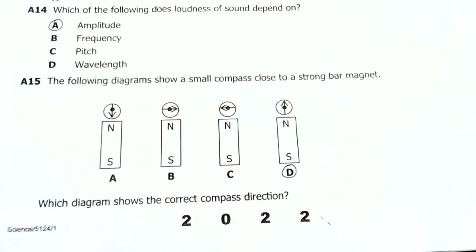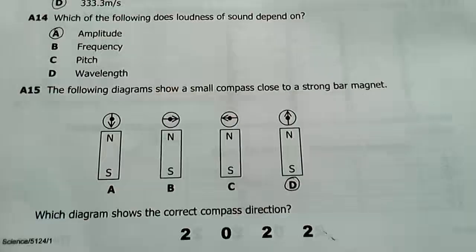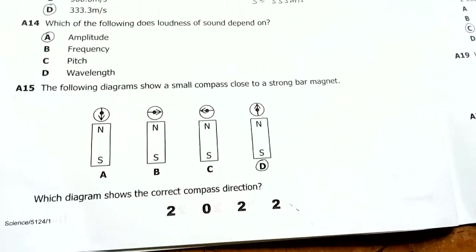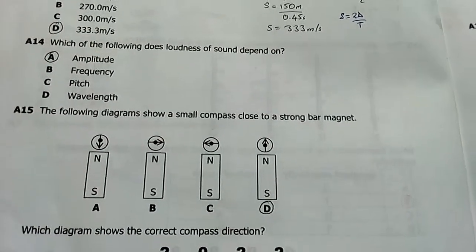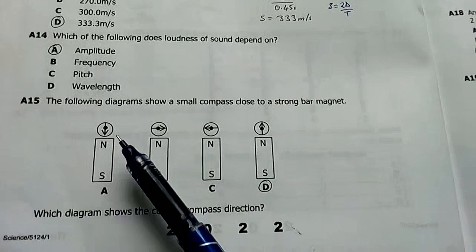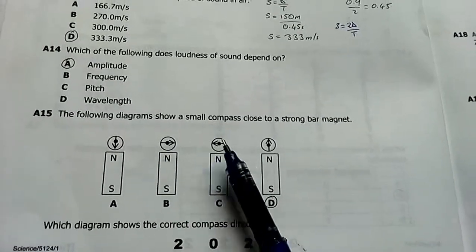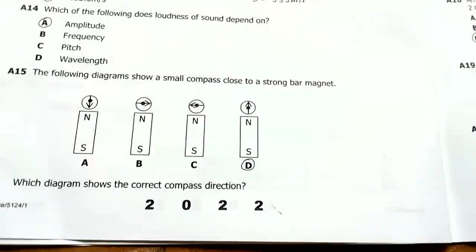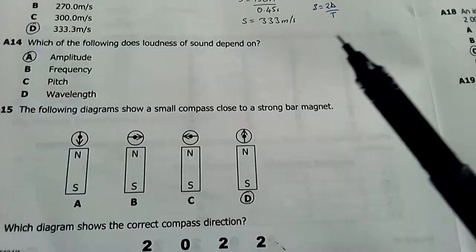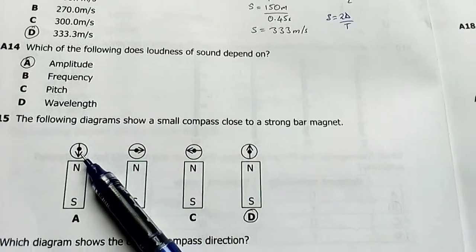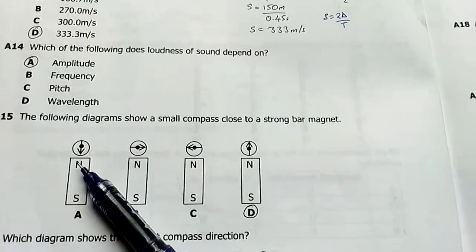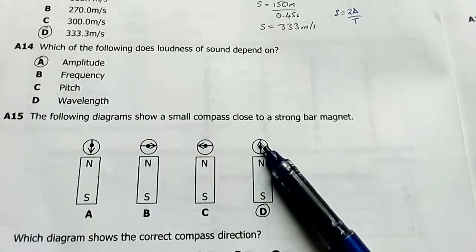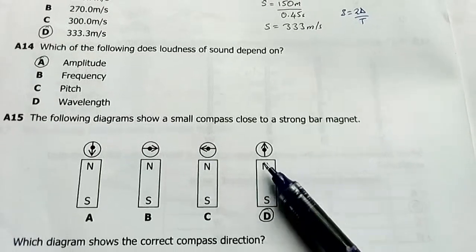Question A15: a small compass (plotting compass) is placed close to a strong bar magnet. The end of the compass needle where the arrow is represents its north pole. Like poles repel and unlike poles attract, so the north of the compass arrow will point toward the south pole of the bar magnet. The answer is D.